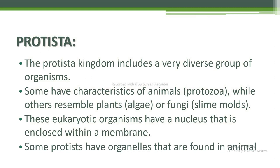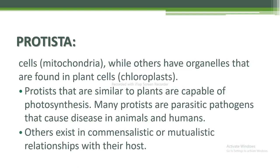Next I am going to discuss Protista. The Protista kingdom includes a very diverse group of organisms — some have characteristics of animals, called protozoa, while others resemble plants (algae) or fungi (slime molds). These eukaryotic organisms have a nucleus enclosed within a membrane. Some protists have organelles found in animal cells like mitochondria, while others have organelles found in plant cells like chloroplasts. Protists similar to plants are capable of photosynthesis, and many protists are parasitic pathogens that cause disease in animals and humans.